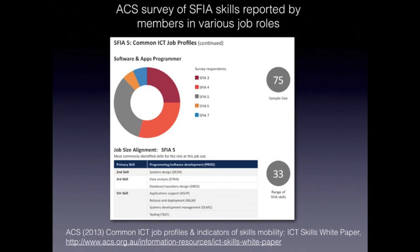Similarly, an ACS study reported on in the ICT Skills White Paper asked its members to identify their ICT job role and the SFIA skills and levels necessary to fulfill that role. Here we see the skills reported for the software and apps programmer role. The primary skill reported was programming software development, followed by systems design. Data analysis and repository design were reported as equal third, with application support, release and deployment, systems development and management, and testing also deemed to be important skills for this role.